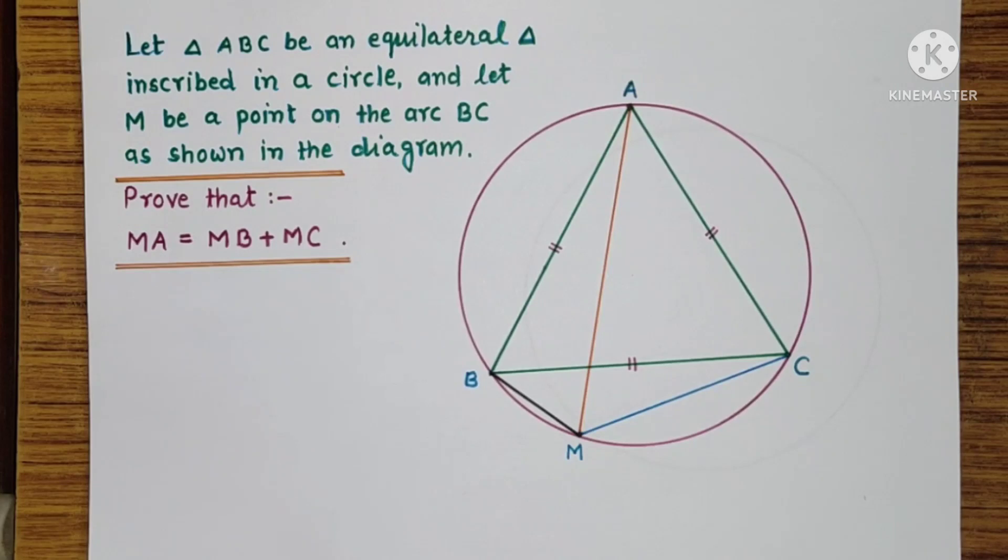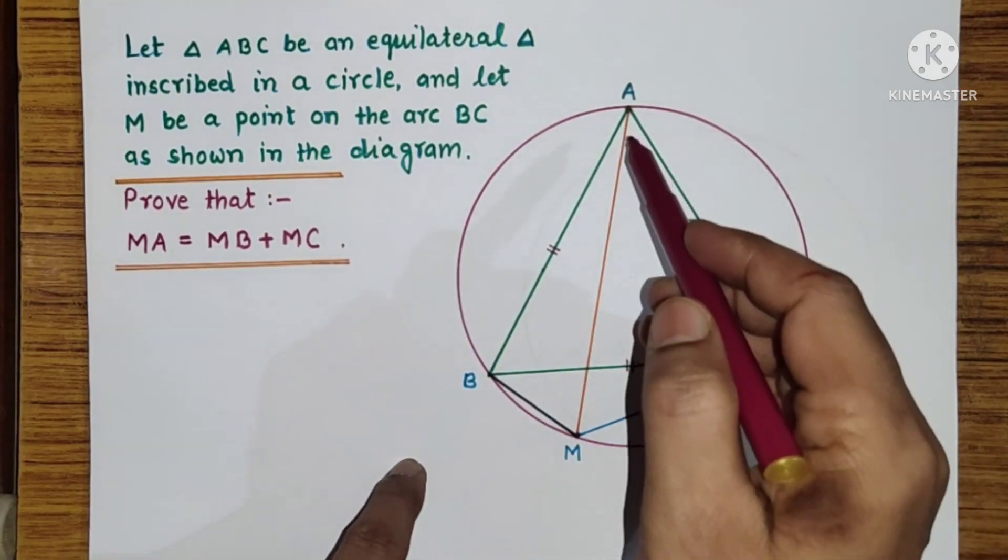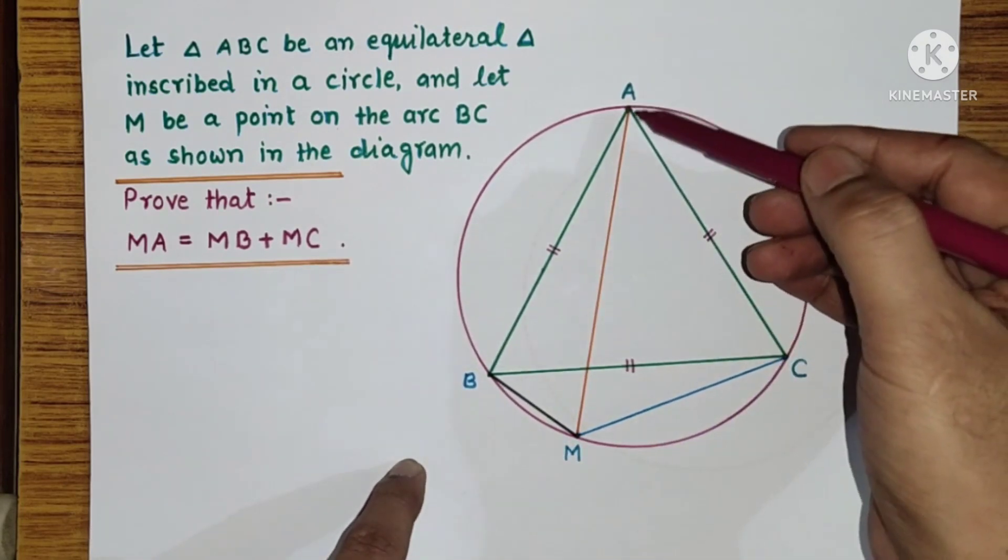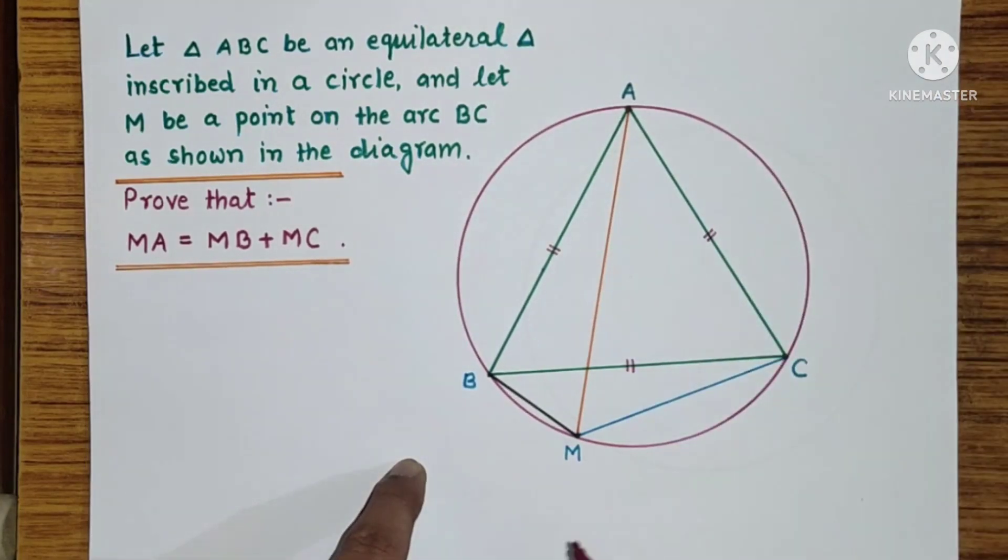The question is, let triangle ABC be an equilateral triangle inscribed in a circle and let M be any point on the arc BC as shown in the diagram. We have to prove that length of MA is equal to MB plus MC.